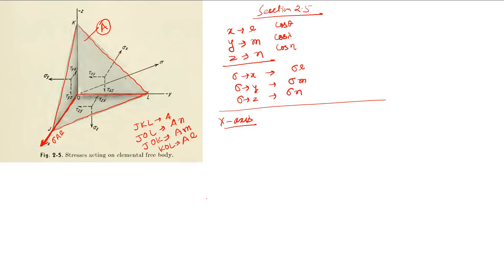Balancing forces in the x-direction: the first force is sigma·A·l. Then sigma_x acts in the opposite direction on area KOL (which is A·l), so we subtract sigma_x·A·l. Next, tau_zx acts on area JOL (A·n), so we subtract tau_zx·A·n. Similarly, tau_yx acts on area JOK (A·m), so we subtract tau_yx·A·m. Setting the sum equal to zero.